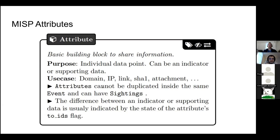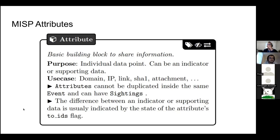For example, the IP address 8.8.8.8 is a public DNS resolver of Google — most probably not malicious, so you would call that supporting data or observable. While a URL delivering malware or acting as a C2 is something malicious that should be fed to your protective tool — for that, you would turn the IDS flag to true. We will see how to do that later on in the example.